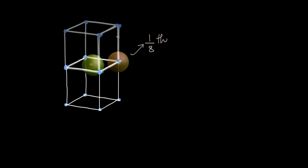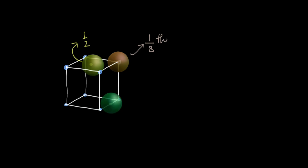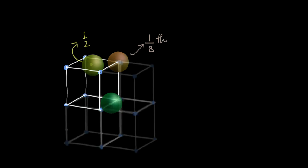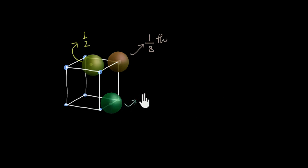A face-centered atom is shared only between two unit cells. Because the lattice point always represents the center of a sphere, this sphere is equally shared between the two unit cells, so the fraction inside the unit cell is one-half. Corner atoms are one-eighth inside while face-centered atoms are 50% inside. What about an atom at the edge center? Any edge of the cube is shared with four unit cells, so an edge-centered atom is also equally shared between four unit cells — it is 25%, or one-fourth, inside.